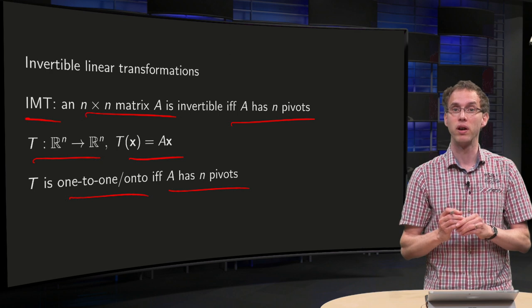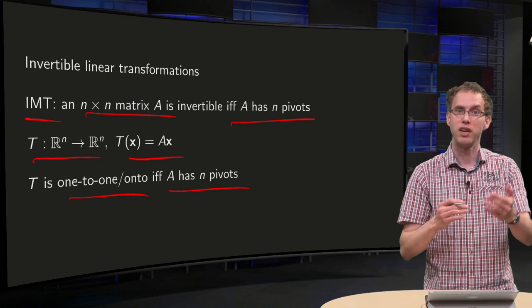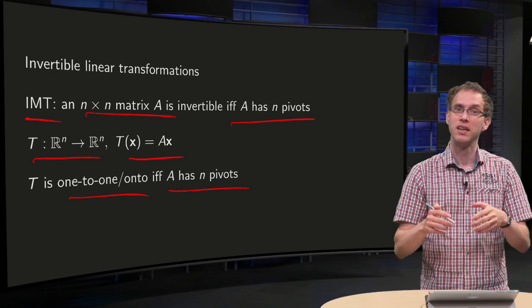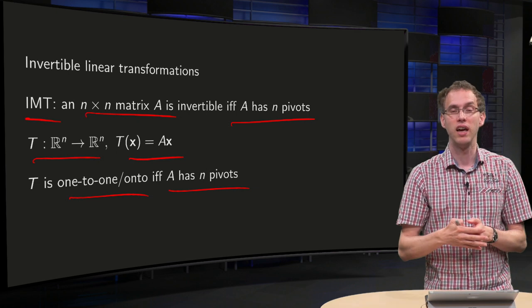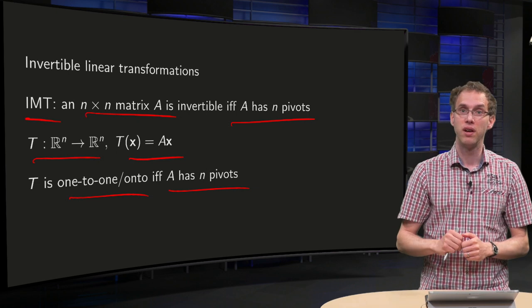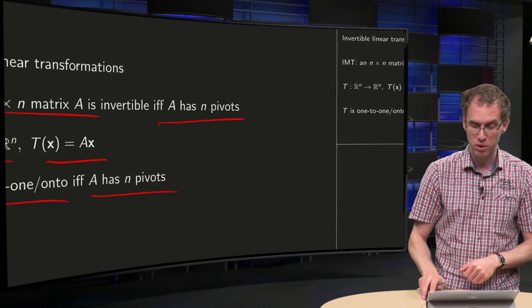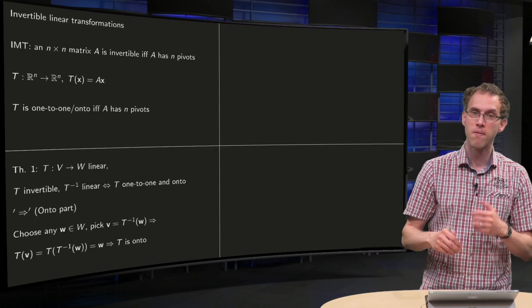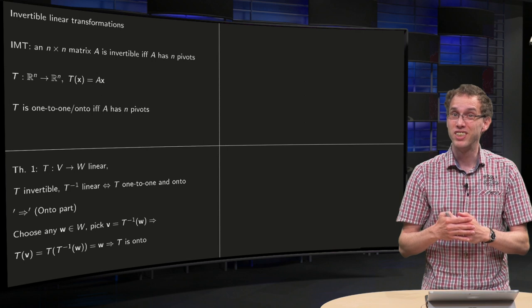So we have seen that before. So here we see this equivalence already rising, that your transformation is invertible if and only if your transformation is 1-to-1 and onto. Now, let's see that in a more general setting.